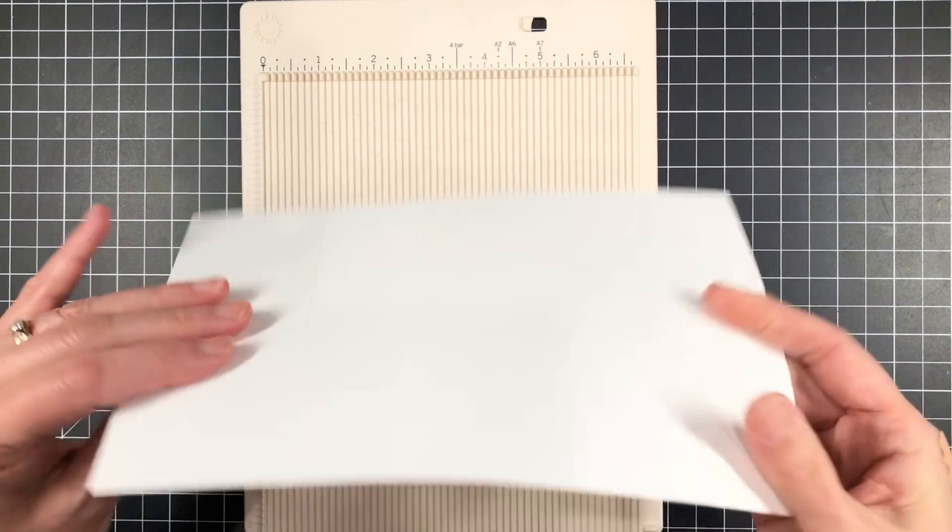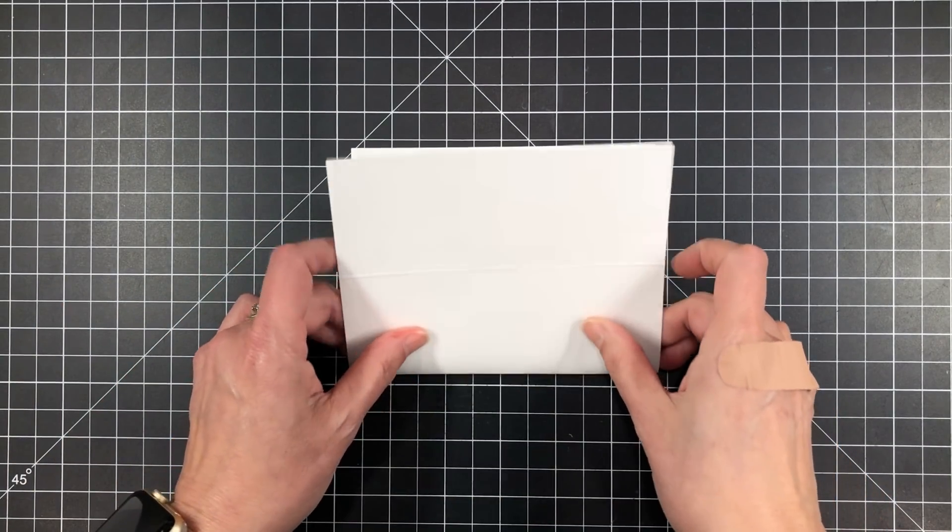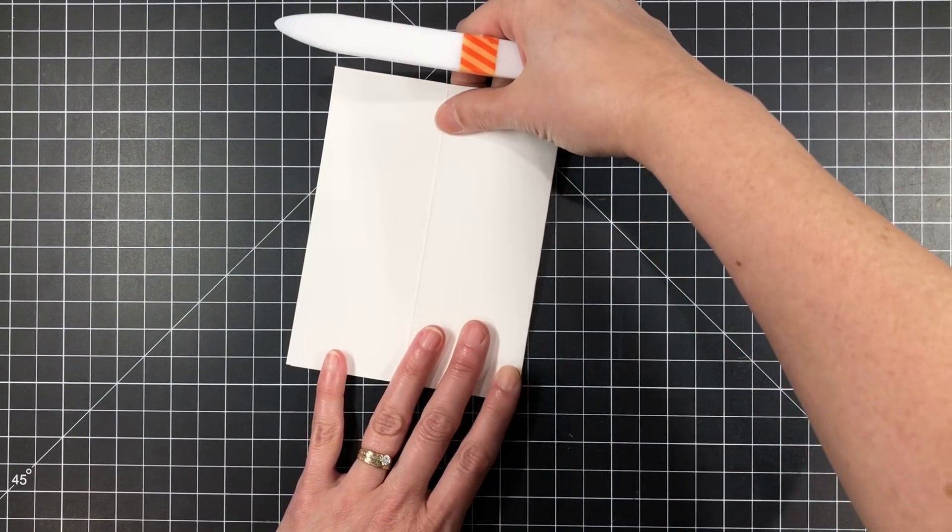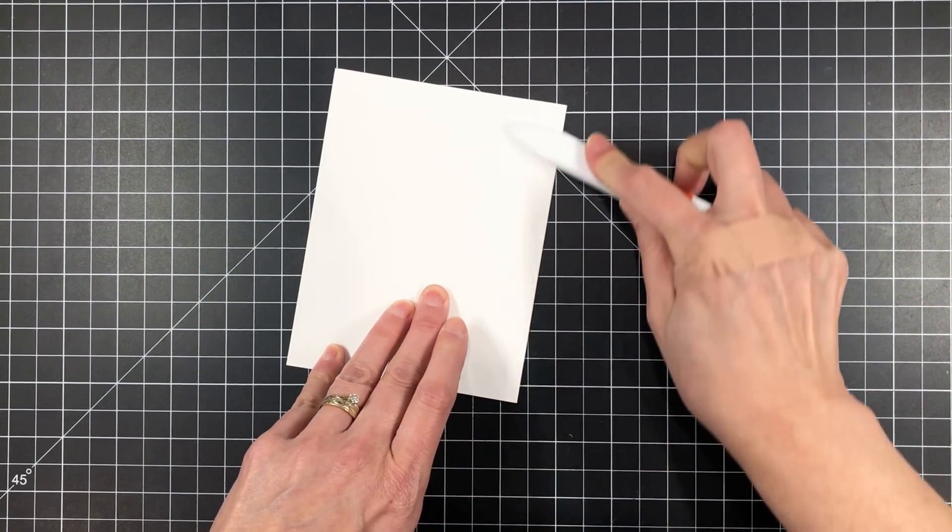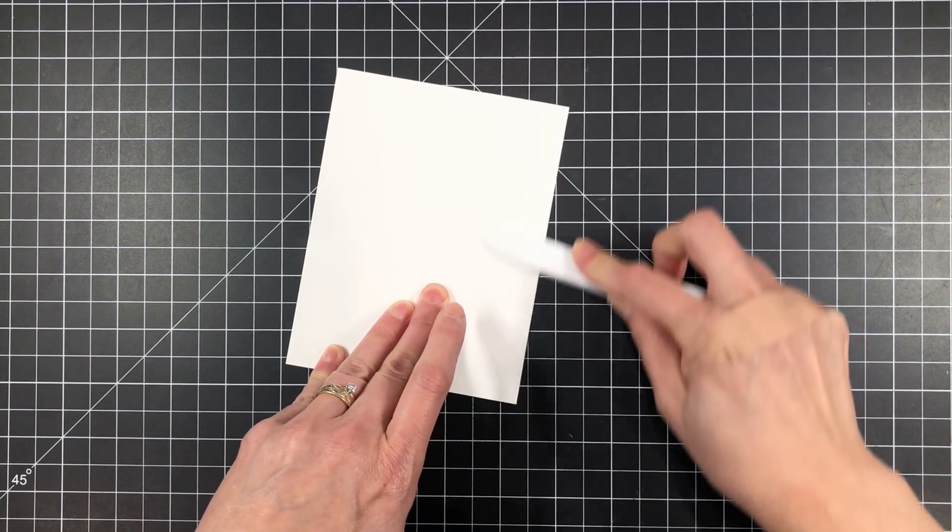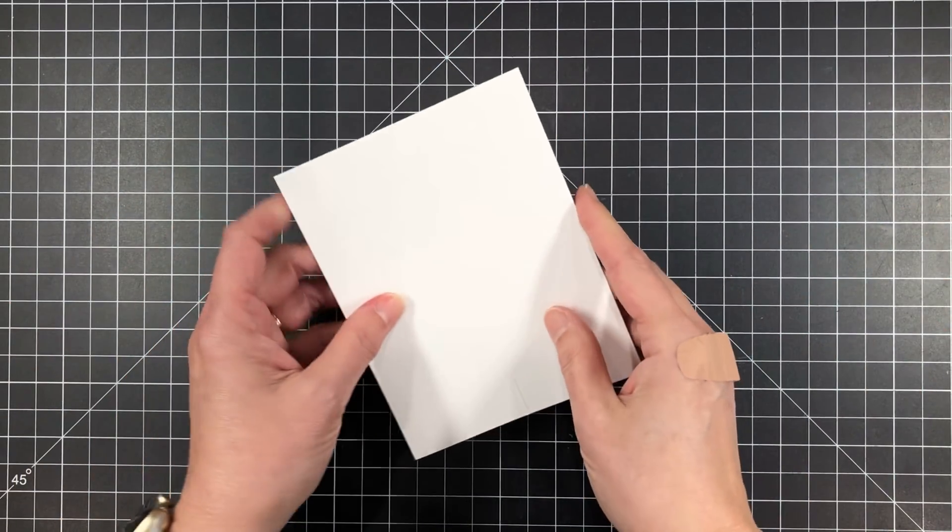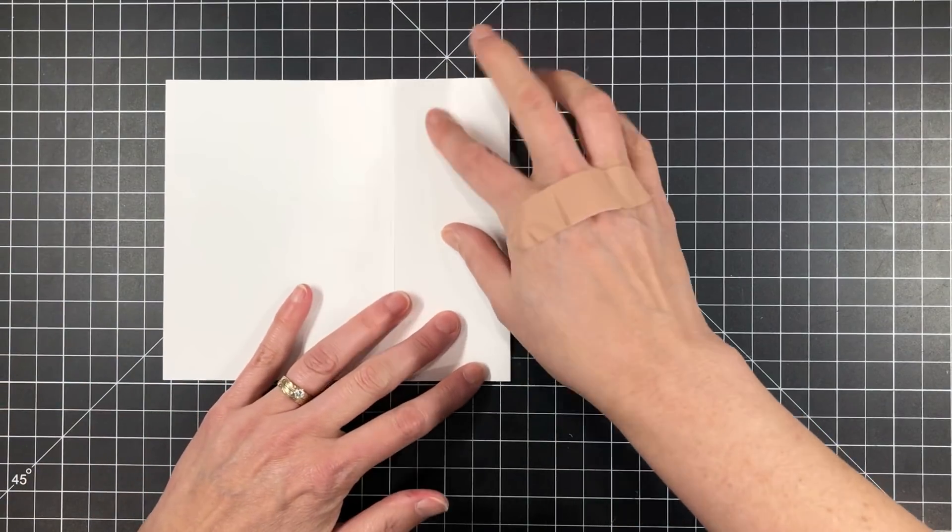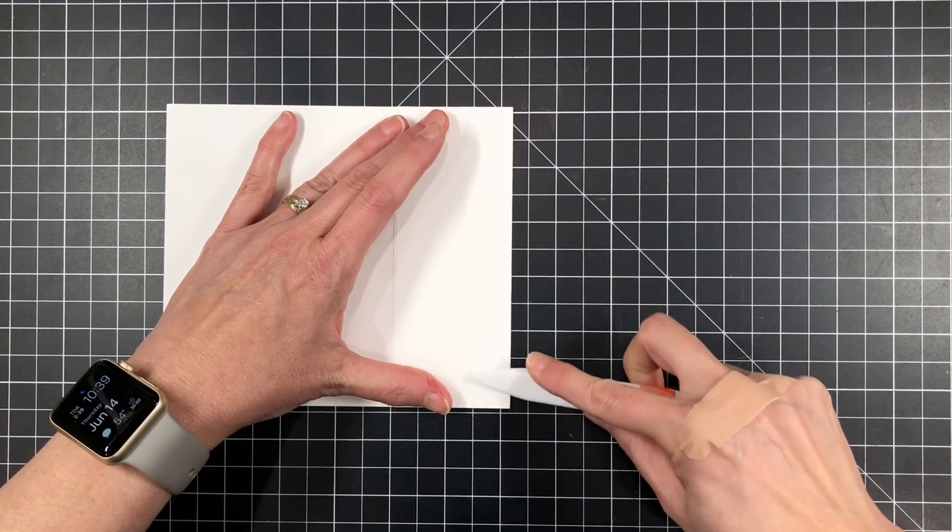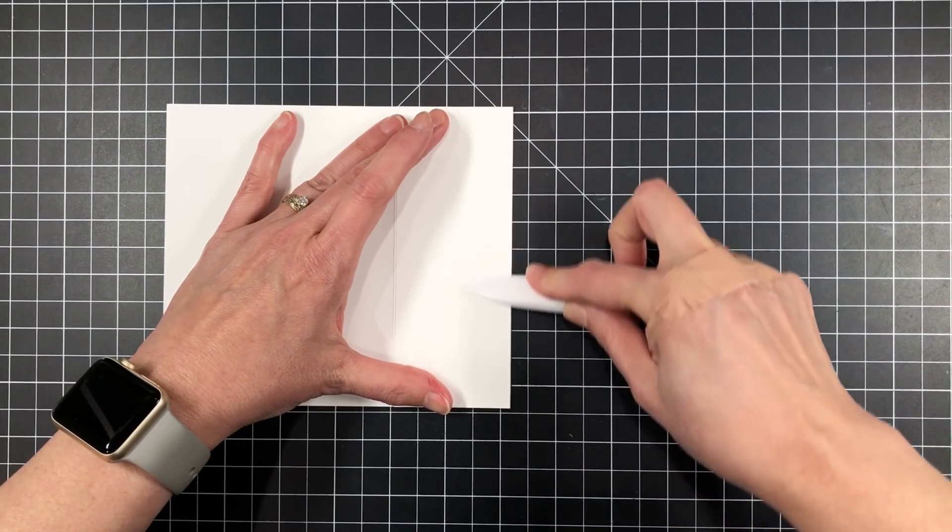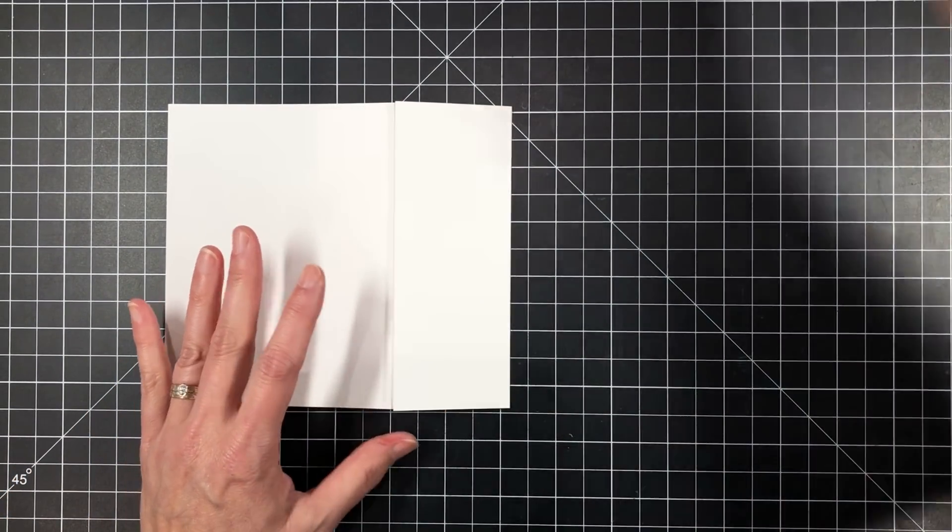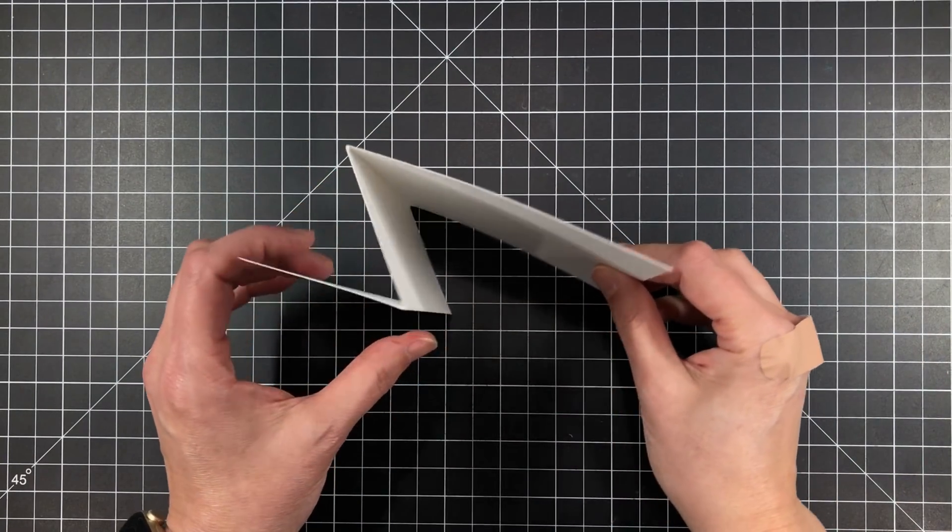And then I can go ahead and start folding these and creasing them. And I'm going to use a Teflon bone folder to crease these very crisply and sharply because it will help my card stay collapsed much better. And that's also important for using 80 pound cardstock instead of something heavier. Usually when I'm going to do any folds like this, I like to use 80 pound or 60 pound weight cardstock because anything higher than that just gets too bulky and it doesn't collapse and fold very nicely.